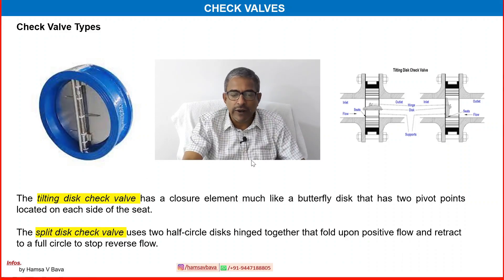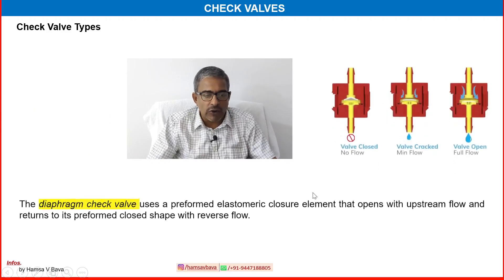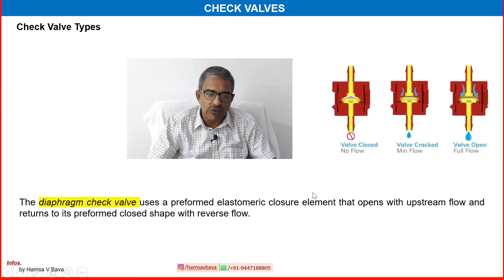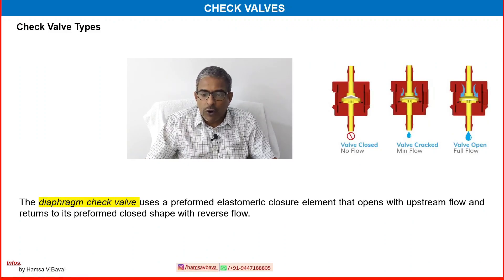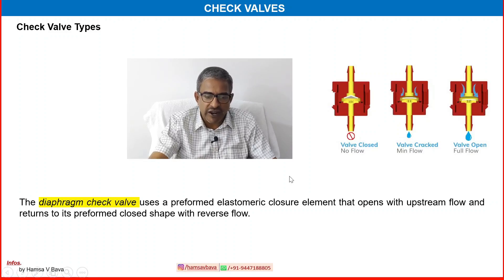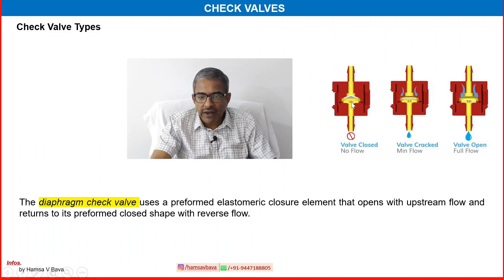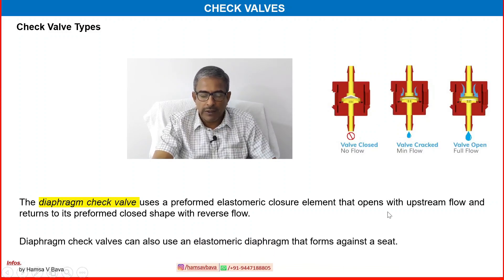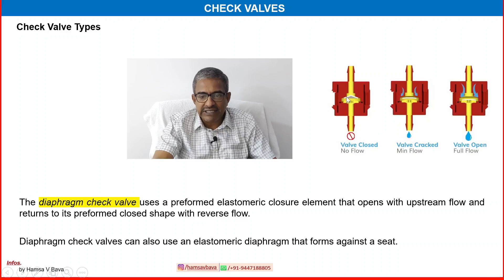Both tilting and split disk types are available. One more type is the diaphragm check valve, which uses a preformed elastomeric closure element that opens with upstream flow and returns to its preformed closed shape when the flow reverses. Flow opens the diaphragm and it closes when flow reverses. The diaphragm check valve can also use an elastomeric diaphragm that forms against the seat.